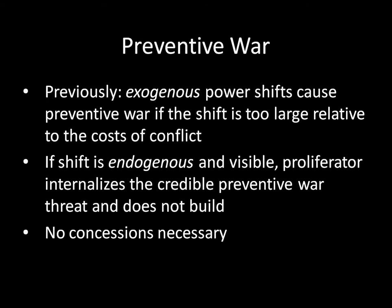Previously in International Relations 101, we've seen what happens when there is an exogenous power shift—that's a power shift that a country doesn't actually control. You can think of that as a long-term demographic shift: if one country has a fast-growing population, it's going to be more powerful in the future. What we saw in the bargaining model of war is that if a declining state sees preventive war as relatively cheap compared to a large unfavorable power shift, the declining state prefers launching war.